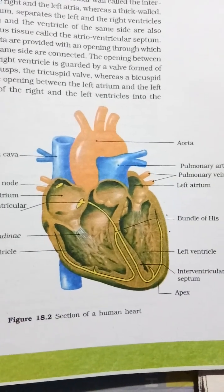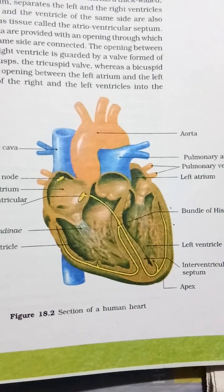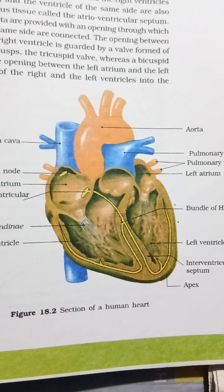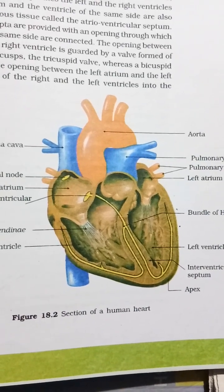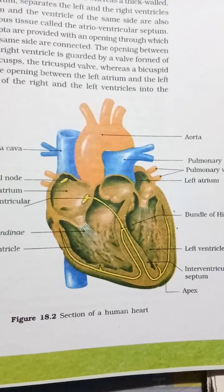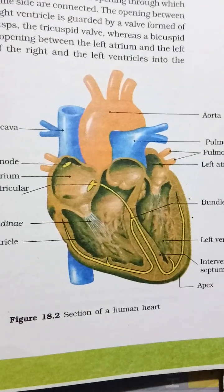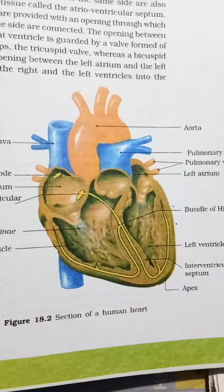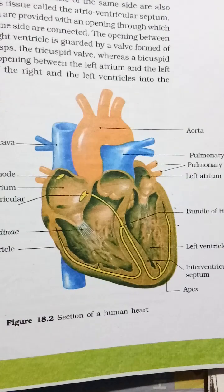The heart is a mesodermally derived organ situated in the thoracic cavity between the two lungs, slightly tilted to the left. It has the size of a clenched fist and is protected by a double-walled membranous bag called the pericardium, which contains pericardial fluid. Our heart has four chambers.